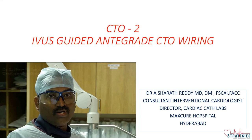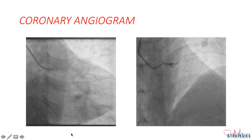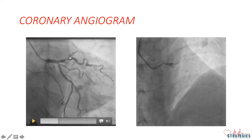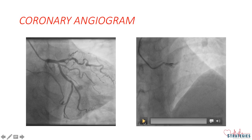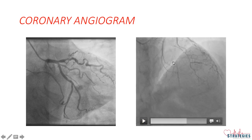It's a case of IVUS-guided antegrade CTO wiring in a CTO sitting at bifurcation. This patient is a 44-year-old male who came with class II shortness of breath with normal sinus rhythm and good LV function. He is diabetic and hypertensive, stress test was positive, so angiogram was done outside which revealed 2-vessel disease. This is a columbian angiogram revealing mild disease in ostial LAD and a total occlusion of mid-LAD after a diagonal origin, and also LAD origin is diseased around 50 to 60 percent, and there is disease even in ostial and distal LAD is filling with bridging collaterals, looking like a small vessel.